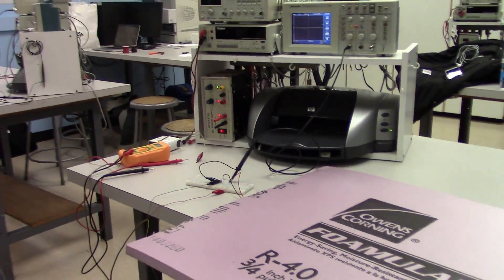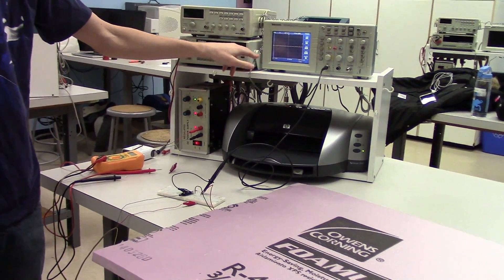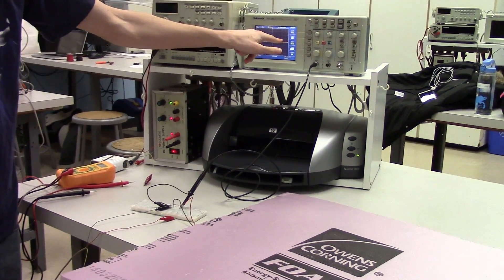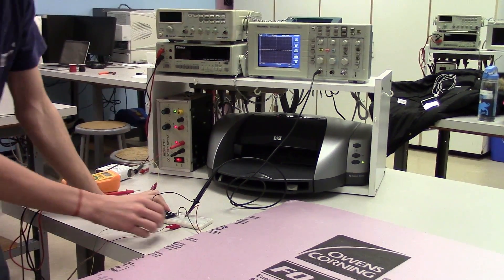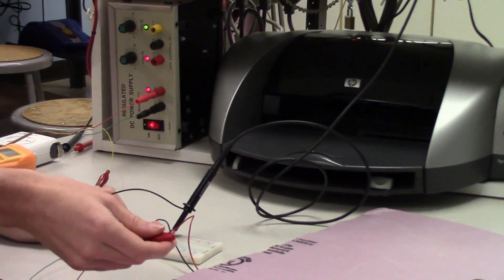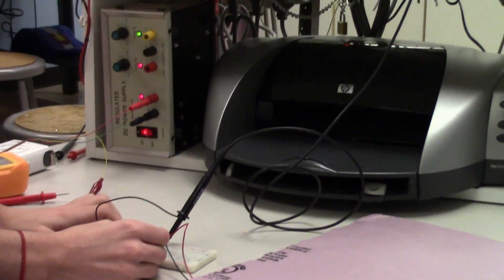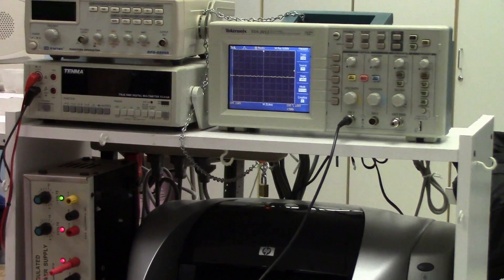But we can show you that it will hold charge. This machine is called an oscilloscope, and the line here shows us the voltage on the capacitor over time. So, what I'm going to do is hook up the capacitor to a voltage source, and I'm going to disconnect it, and something interesting is going to happen.